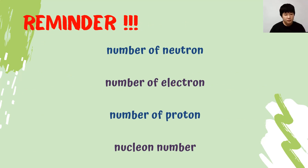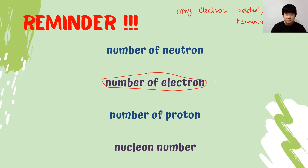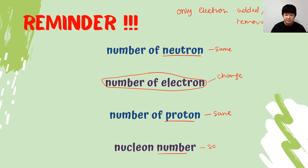A kind reminder: only electrons can be added or removed from an atom. Therefore, only the number of electrons will change when going from an atom to an ion. The number of neutrons remains the same, the number of protons remains the same, and the nucleon number remains the same. Only the number of electrons will change, and the number of protons shall remain the same from beginning to end. Always remember that. That's it for this video — I'll see you again in part 2 of subtopic 2.1.